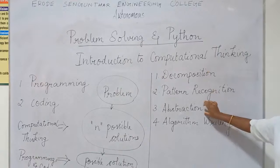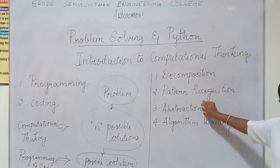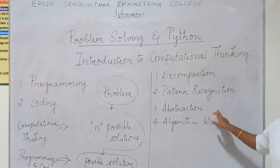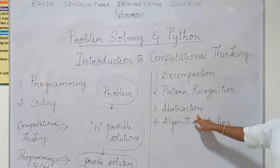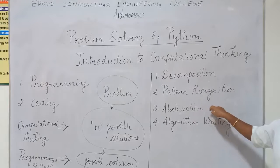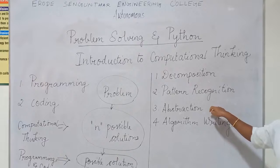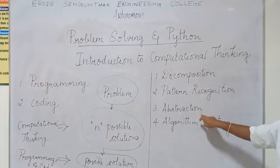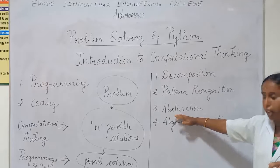Abstraction gives only the main aim. The main aim of mine is to reach Mars — that is abstraction. I will not give the implementation details: what are the internal details, what is the way I am going to reach — nothing is mentioned in the abstraction stage.